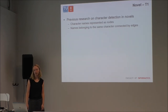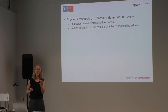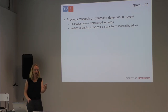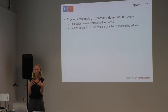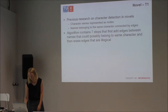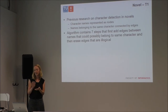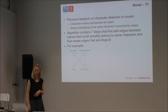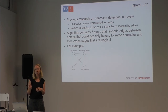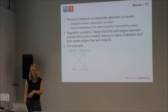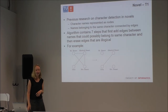For T1, we relied heavily on previous research for character detection in novels. Character names are represented as nodes, and edges between nodes connect names belonging to the same character — for example Sherlock Holmes, Mr. Holmes, and Sherlock all need to be linked to the same character, otherwise we might count one character multiple times. The algorithm has seven steps: first add edges between names that could possibly belong to the same character using the same last name or a nickname database — connecting Elizabeth Bennett to Lizzie, for example — and then remove edges that are illogical.